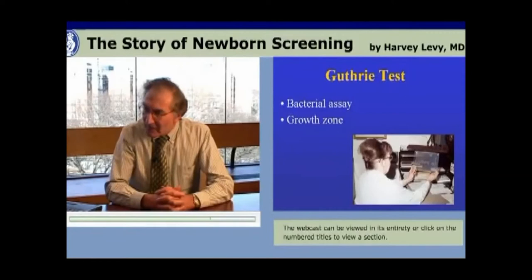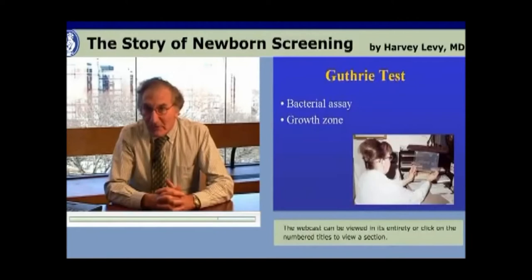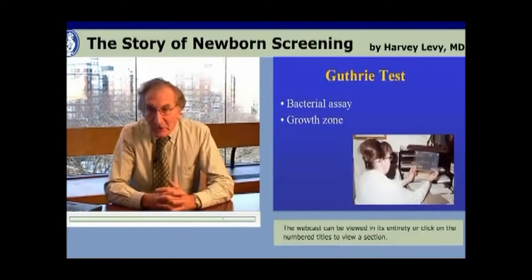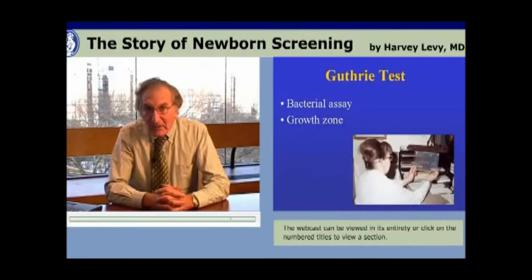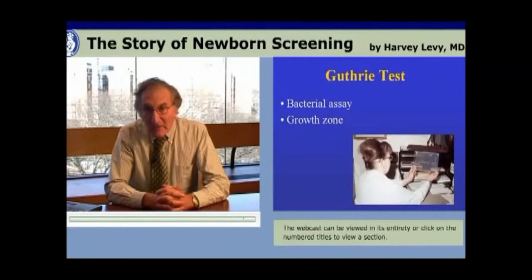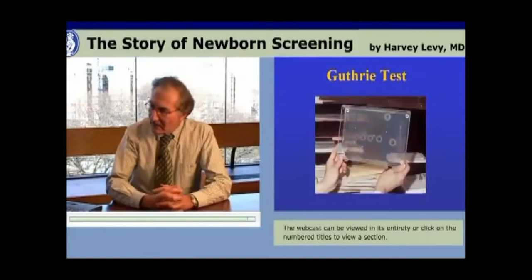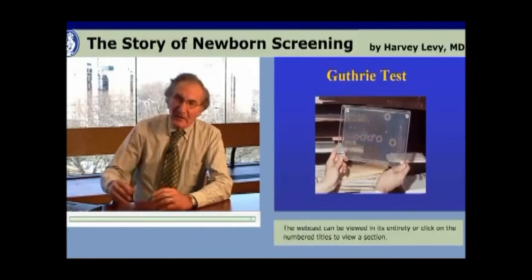A typical bacterial assay Guthrie test has in the center a row of standard control discs with graded amounts of phenylalanine to verify the test and serve as a measure of phenylalanine in the unknowns. Throughout the plate, blood specimens from normal newborns show very little growth, indicating very little phenylalanine. In the top right-hand corner of the plate, there is large growth around a blood specimen from a baby with PKU, indicating the increased phenylalanine in that baby.